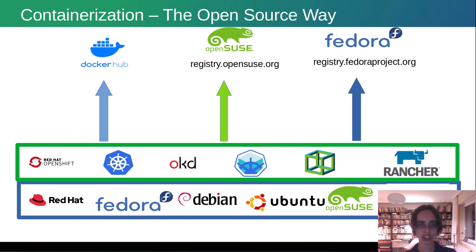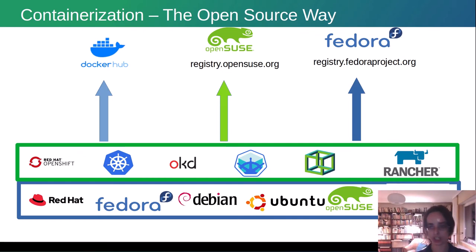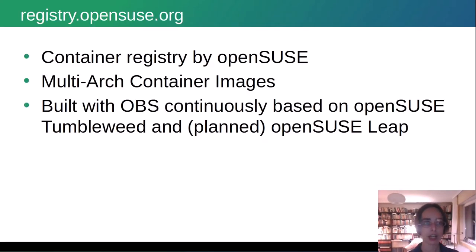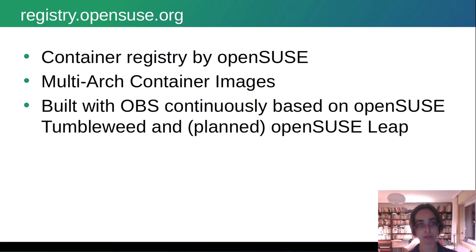We have started with registry.opensuse.org. You receive OpenSUSE-based images from registry.opensuse.org, and these container images should be runnable on OpenShift, Kubernetes in general, OKD, Minikube, our own Kubernetes platform OpenSUSE Kubic, and Rancher. Registry.opensuse.org is the container registry by OpenSUSE — we build multi-arch container images there for x86, s390x, ARM, PowerPC, and other architectures. These container images are built continuously with our Open Build Service based on OpenSUSE Tumbleweed, and we plan to do that also with OpenSUSE Leap.